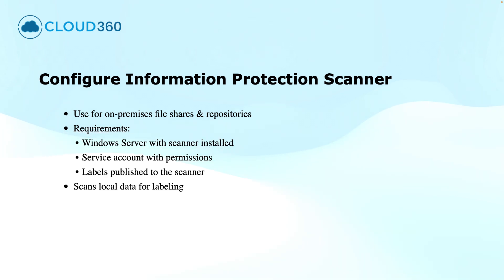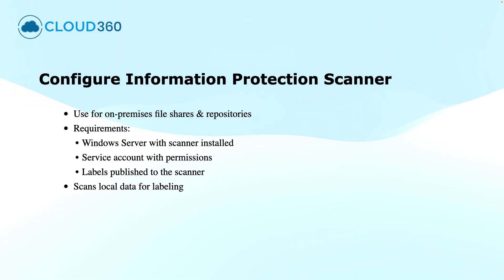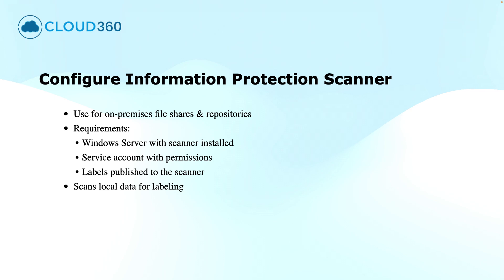For organizations with on-premises file servers or legacy repositories, the Information Protection Scanner lets you classify and label the files at scale. It runs on Windows Server and uses a service account to access and label the local files.